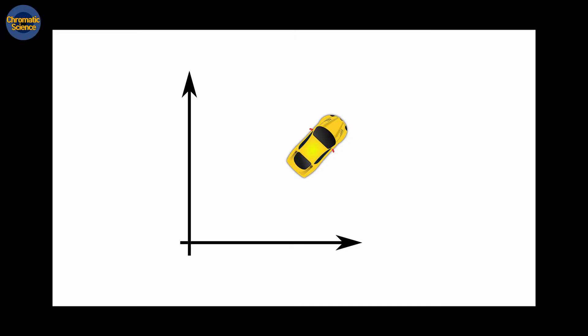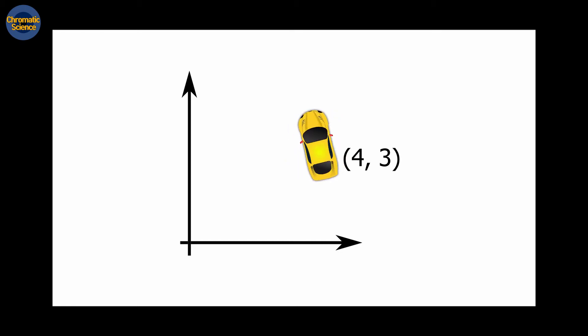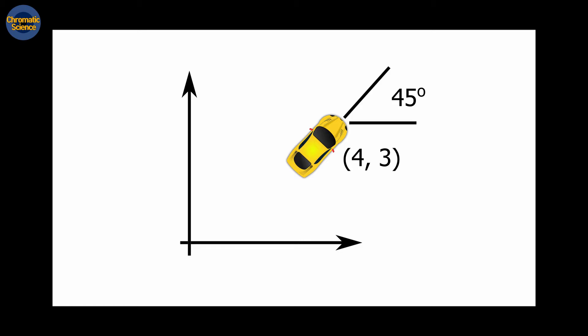Now, let's go back to the two-dimensional plane. This time, let's consider a vehicle instead of a spot. We can express the location of the car using two numbers, but it's not enough because we cannot specify the direction of the car using only two numbers. We need an additional number to show the angle. We will call this direction information the orientation of the car. Unlike a point, the status of an object cannot be fully expressed by its location — you should also consider its orientation. Therefore, on the plane, you need three numbers to specify the location and orientation of an object.